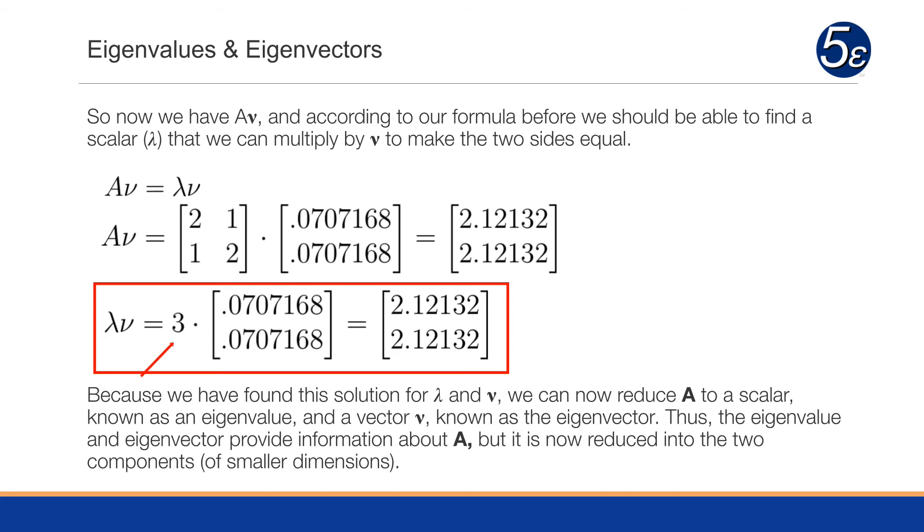So because we found this solution for lambda and nu, we can reduce the matrix A, which is a 2 by 2 matrix, to a scalar times an eigenvector, which is a 2 by 1 matrix. So instead of two dimensions, we're now dealing with only one dimension.